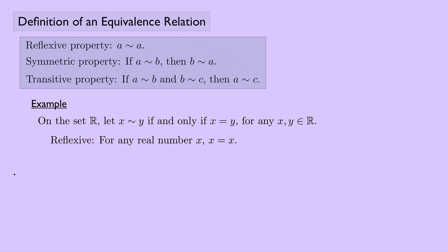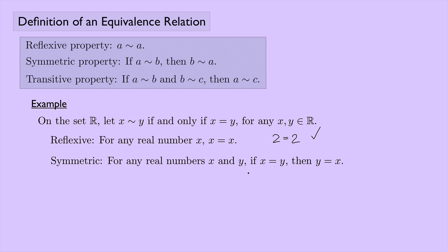First, reflexive: for any real number X, can you say X equals X? Yes — think about any real number, say two. Does two equal two? Sure. For any real number, it equals itself. For symmetric: for any real numbers X and Y, if X equals Y, then Y equals X. If two equals two, then two equals two — that works. And if two equals three, well, two doesn't equal three, so that case never happens. We know how the equal sign works, and if X equals Y, then Y equals X.